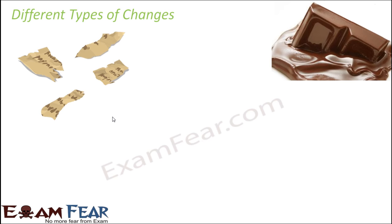So now the question is, there are many different types of changes. For example, some changes might cause a change in shape. When you tear a paper into four pieces, the shape changes because the shape of each piece is very much different from the original piece of paper. So there is a change in shape.